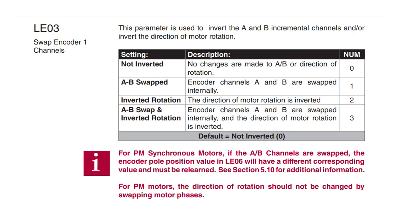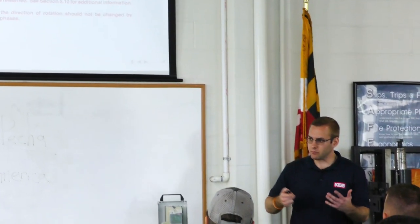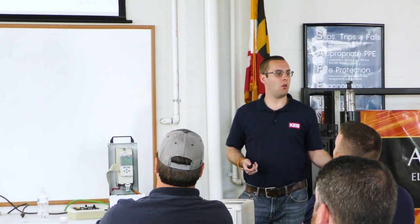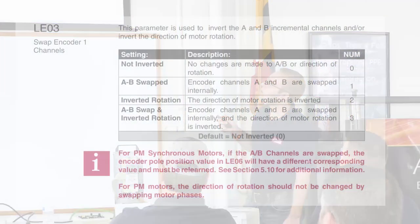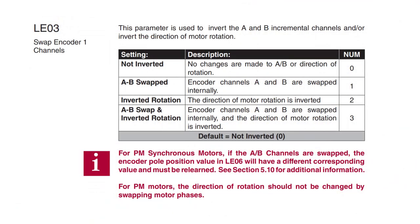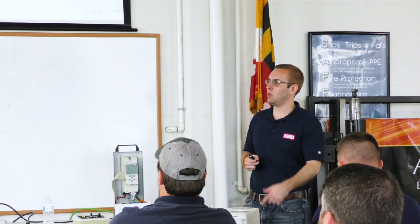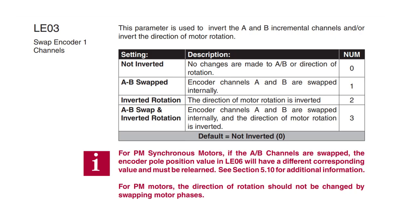No matter which way you go, if you change that setting you have to do another SPI — you can't change it and try to run, it's not going to work. The other two channels — inverted rotation and A-B swap with inverted rotation — are the same as the first two, except they change the polarity or direction. So if your motor runs with low current at the right speed but goes the wrong direction — you command up and the car goes down — all you need to do is change to inverted rotation.